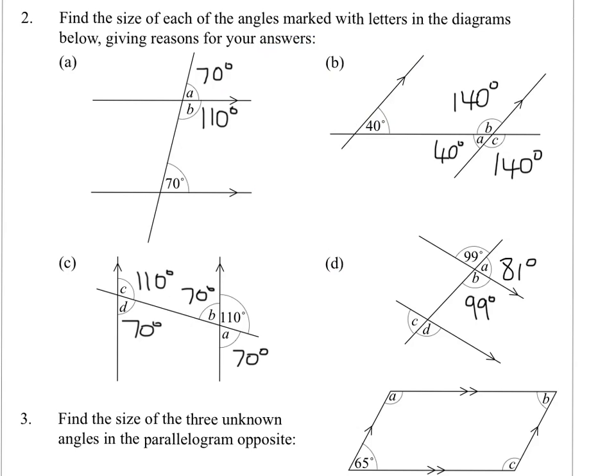B corresponds with D. So we know that D is 99 degrees. So I'll work out that C is also 81 degrees.